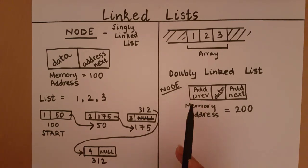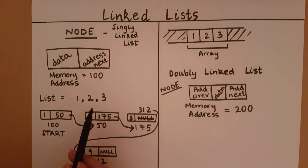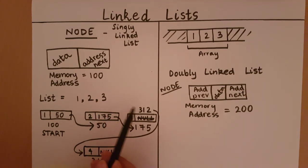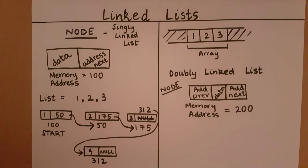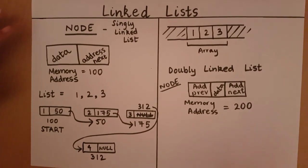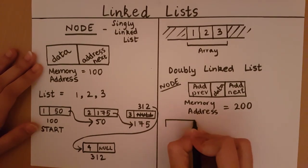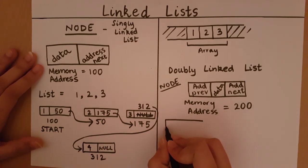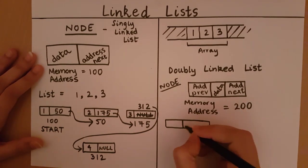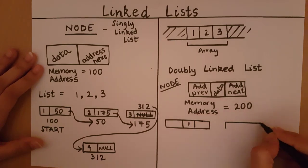In a doubly linked list, when we store the address of the previous node as well. One block stores data, one stores the address of the next node, and one stores the address of the previous node. This is helpful when you want to traverse the linked list in reverse or perform many operations where having the previous address proves useful. Let me explain that with a quick example using three nodes.